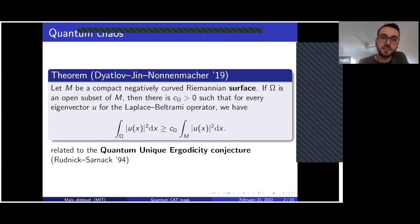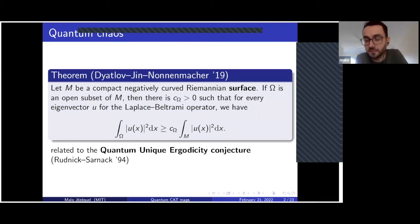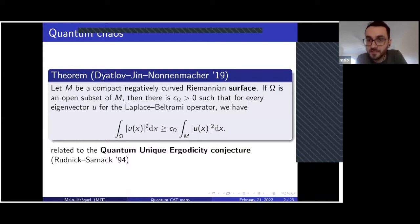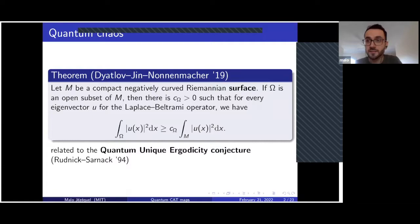Our result is related to a result by Dyatlov-Jin and Nonnenmacher in the geometric context. If you look at eigenstates for the Laplace-Beltrami operator on a Riemannian surface, they satisfy a unique continuation principle, meaning that like holomorphic functions, they cannot vanish on an open set.